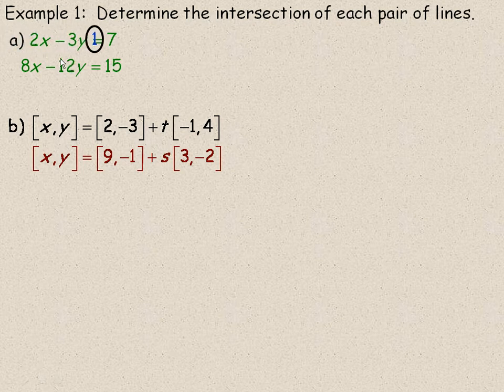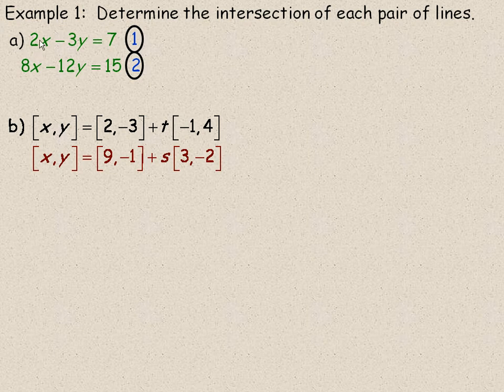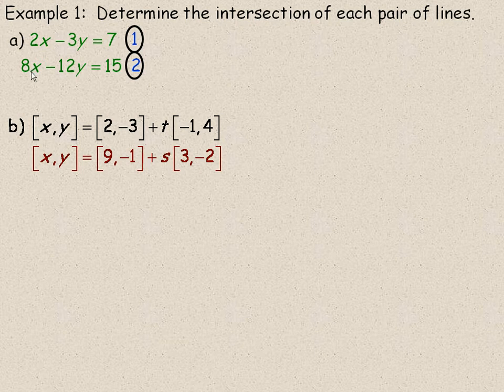And what I'm going to do is refer to the two lines as equation number 1 and 2, and I'm going to eliminate x here. So there's a 2x here, there's an 8x here, what common multiple of 2 and 8 is there? And of course, the answer is 8, that's the least common one.